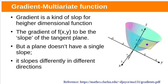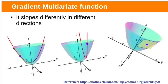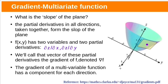For a function f with inputs x and y, the gradient is the slope of the tangent plane. But this plane doesn't have a single slope — it slopes differently in different directions. To find the slope at a particular point in the x direction, we need to travel across the surface from that point along the curve in which y is held fixed. If the y value is around 0.7, the function will look like this curve. Similarly, to find the slope in the y direction, we travel along the curve in which x is held fixed.